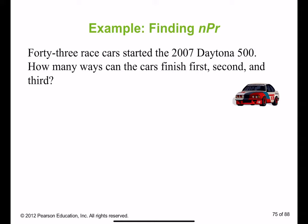Next one. 43 race cars started the 2007 Daytona 500. How many ways can the cars finish first, second, and third? Now here we would use permutation because order is important, right?